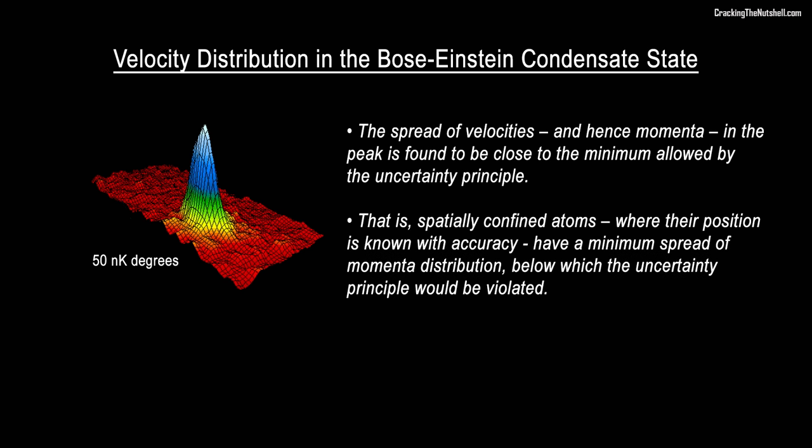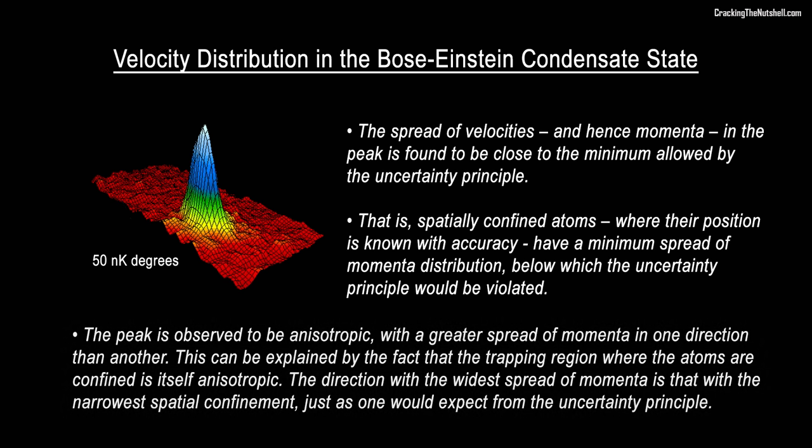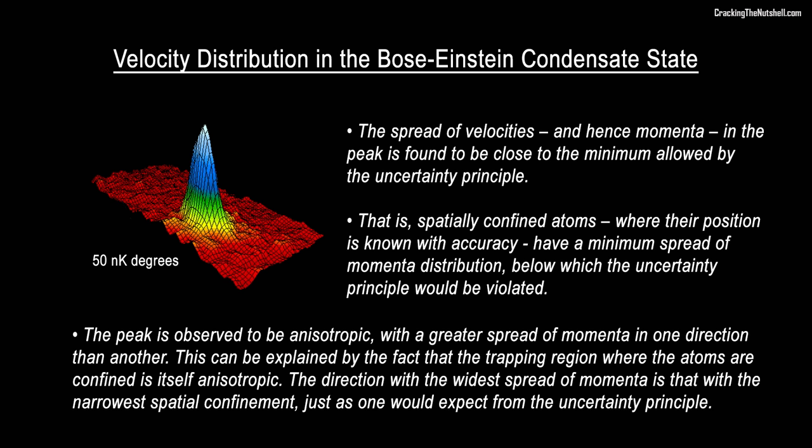Well, it turns out that the spread of velocities, and hence momenta, in the peak, is found to be close to the minimum allowed by the uncertainty principle. That is, spatially confined atoms, where their position is known with accuracy, have a minimum spread of momenta distribution, below which the uncertainty principle would be violated. On closer inspection, the peak is observed to be anisotropic, with a greater spread of momenta in one direction than another. This can be explained by the fact that the trapping region where the atoms are confined is itself anisotropic. The direction with the widest spread of momenta is that with the narrowest spatial confinement, just as one would expect from the uncertainty principle.